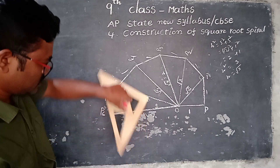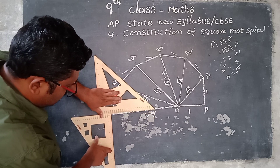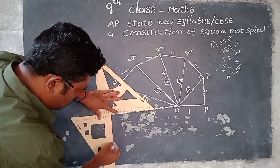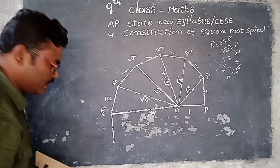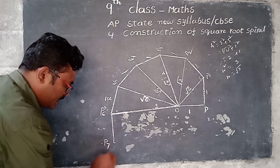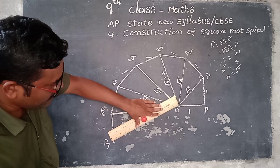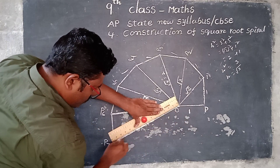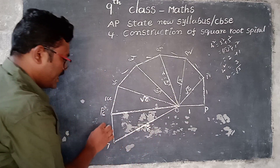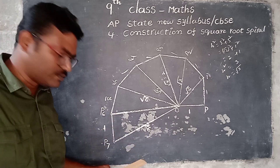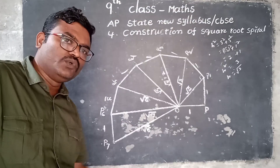Next, construct another perpendicular at point P6 of unit length, and let this point be P7. Joining O and P7 gives root 8. So root 8 completes the next step of the spiral. This spiral construction continues forming the square root spiral.